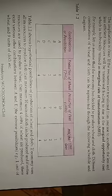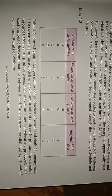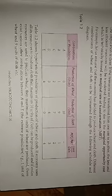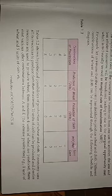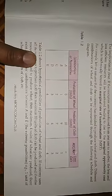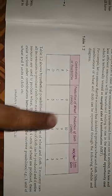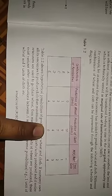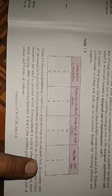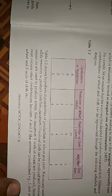For example, let us assume that the economy has decided to produce wheat and cloth. Different combinations of wheat and cloth can be represented through the following schedule and diagram. The combinations of possibilities are A, B, C, D, E with production of wheat: 0, 1, 2, 3, 4 and production of cloth: 10, 9, 7, 4, 0 units. MOC or MRT is obtained through loss upon gain.